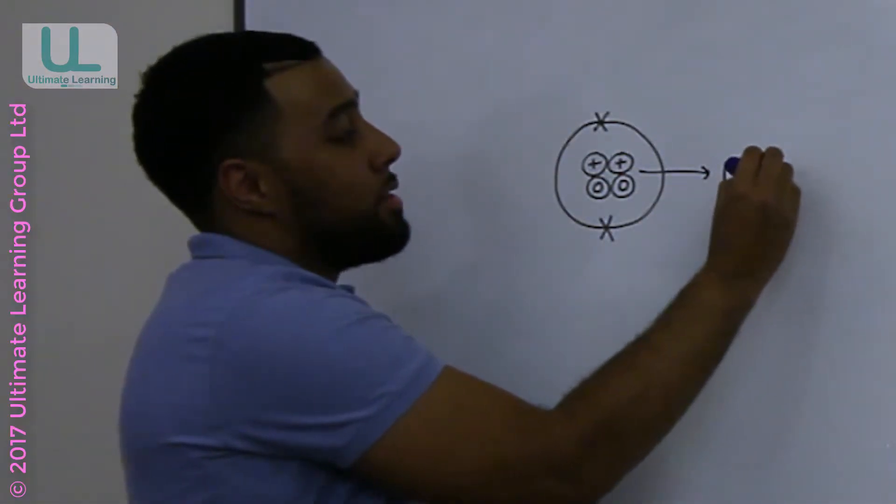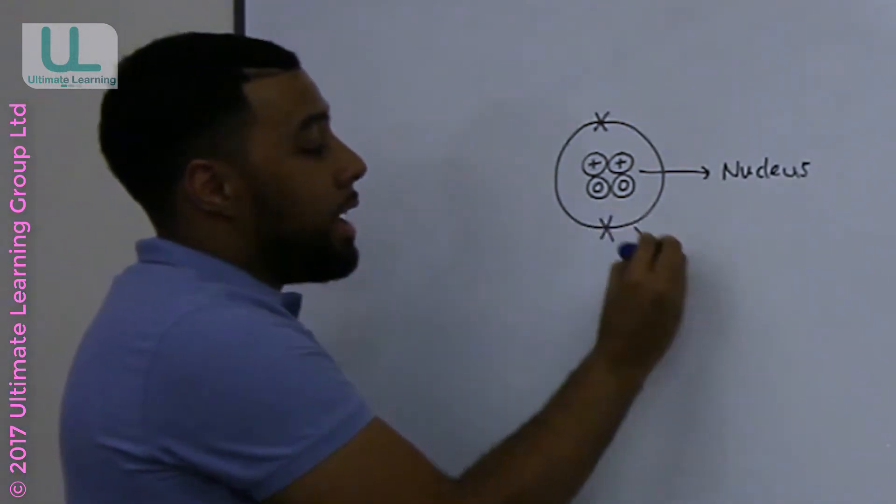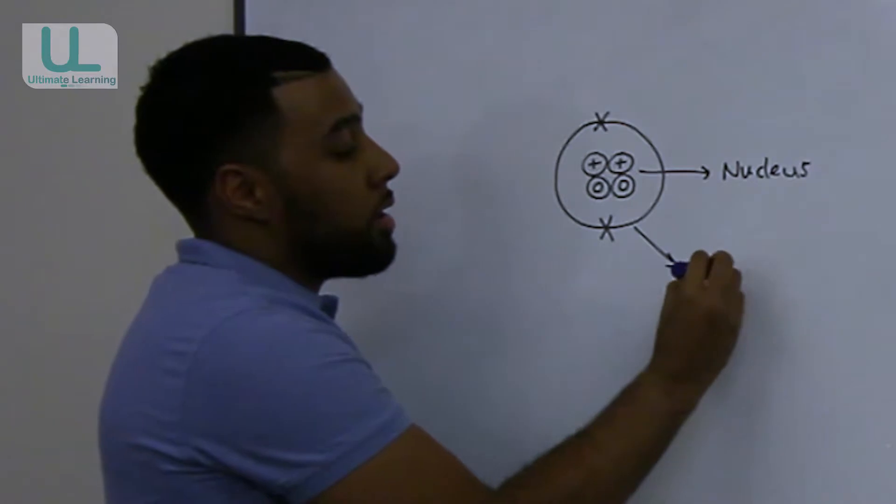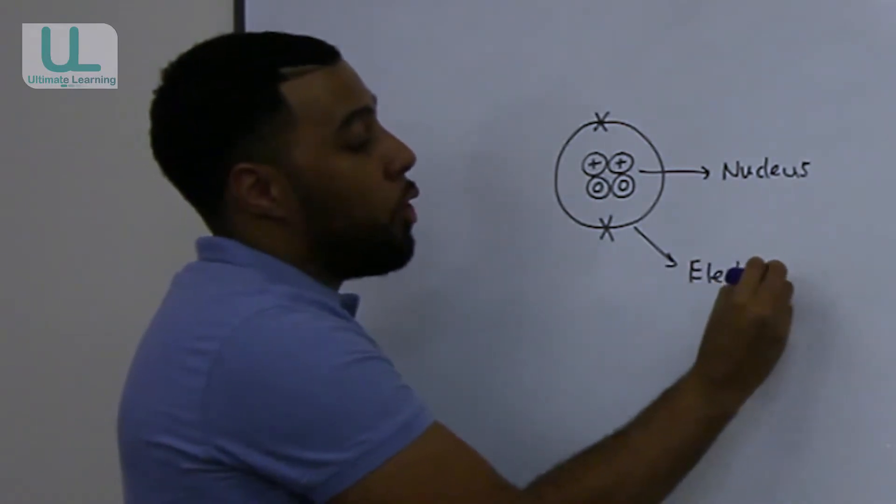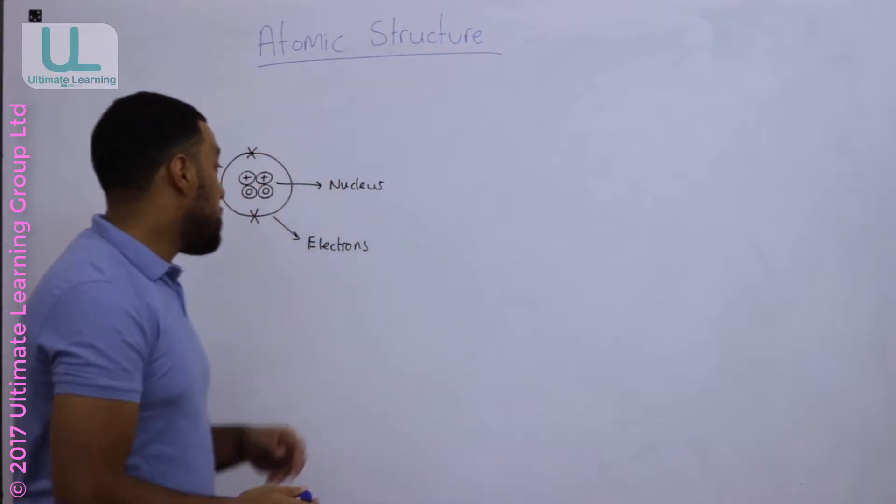It has a central nucleus and it has electrons that are orbiting the nucleus. You guys need to know the charges of the subatomic particles that make up the atom.